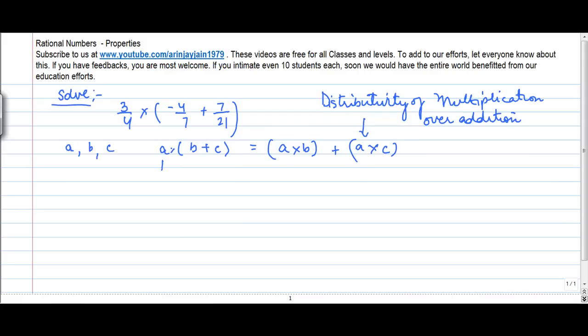So what happens is that this A was to be multiplied by sum of B and C, but you distribute this A over the addition of these two numbers. Now applying this logic here, we can write this equation as 3 upon 4 into minus 4 by 7 plus 3 upon 4 into 7 by 21.